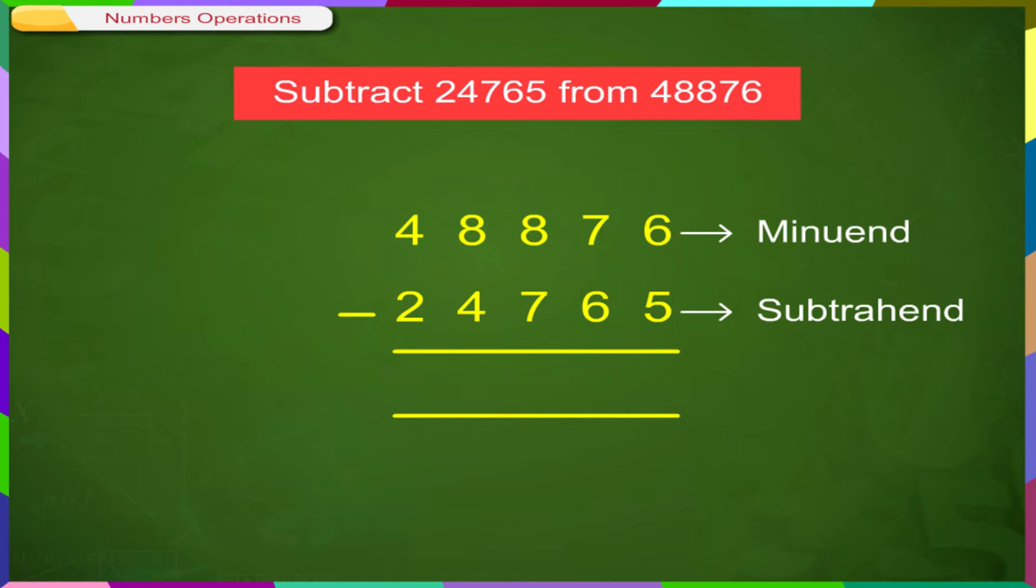Subtracting in the 1's column, 6 minus 5 is equal to 1. Subtracting in the 10's column, 7 minus 6 is equal to 1. Subtracting in the 100's column, 8 minus 7 is equal to 1. Subtracting in the 1000's column, 8 minus 4 is equal to 4. Subtracting in the 10,000 column, 4 minus 2 is equal to 2.